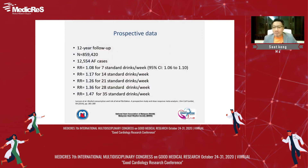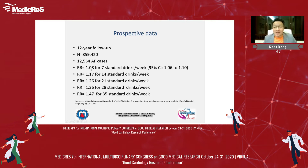Let's look at some prospective data — the data that we want to see, because it has been gathered over a long period of time. Prospectively, with a 12-year follow-up and a whopping 859,000 patients, approximately 12,000 cases of AF were detected. The relative risk of developing AF is 1.08 for light drinking — that's less than seven standard drinks. So even light drinking, one cannot escape from the fate of increasing the risk of AF development.